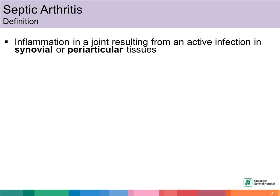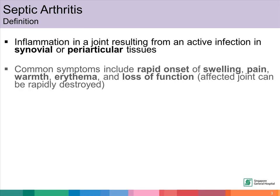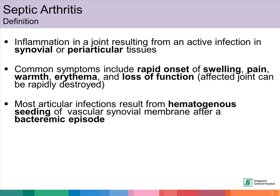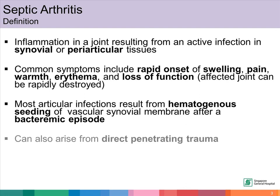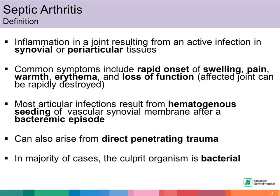Septic arthritis is defined as inflammation in the joint resulting from an active infection in the synovial or periarticular tissues. It is usually rapid onset and there's swelling, pain, warmth, and redness of the affected joint. Most septic arthritis happens from hematogenous seeding of the vascular synovial membrane after a bacteremic episode. It can also arise from direct penetrating trauma. In the majority of cases, the culprit organism is a bacterial agent.